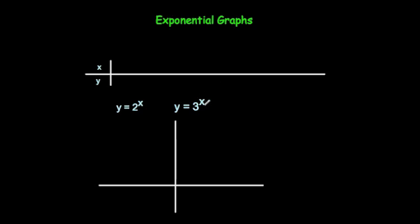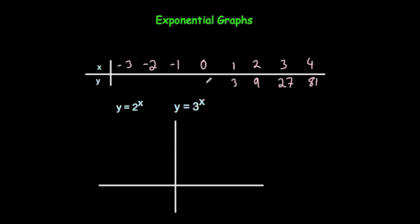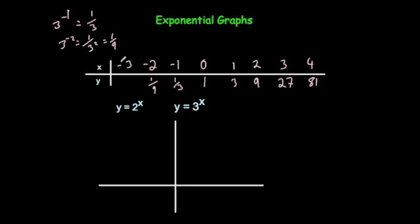Let's have a look at y equals 3 to the x. So let's do our table for x = minus 3, minus 2, minus 1, 0, 1, 2, 3, 4. 3 to the power of 4 is 81. 3 to the power of 3 is 27. 3 squared is 9. 3 to the 1 is 3. 3 to the 0 is 1. 3 to the minus 1 is 1 third. 3 to the minus 2 is 1 over 3 squared, which is 1 ninth. And 3 to the minus 3 is 1 over 27.